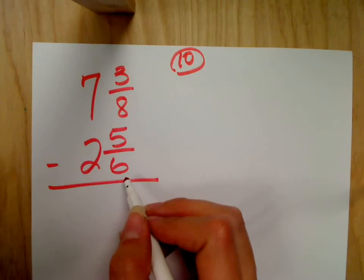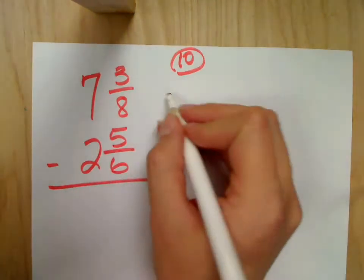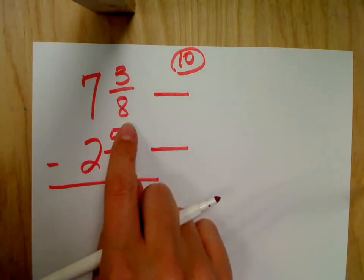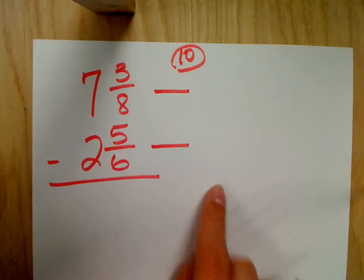Just like I did for number 9 and for number 8, I need a common denominator. So I ask, okay, well, if I count by 6s and I count by 8s, I'd find out that 24 is the number they have in common.